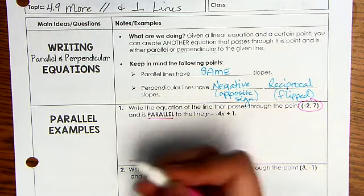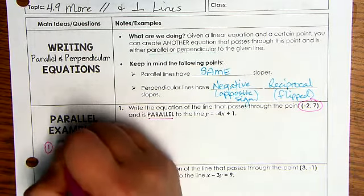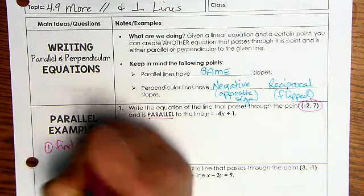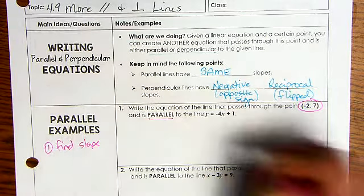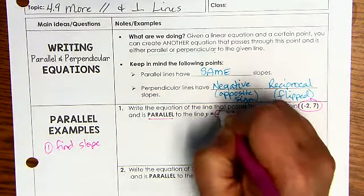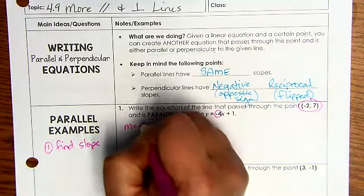What you need to do is you've got to find out what is. So the first thing that you do is find slope. Well, in here my slope is negative 4.